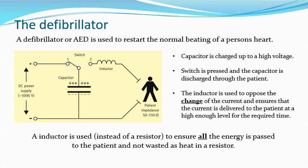Moving on to further examples: a defibrillator contains both a capacitor and an inductor. The capacitor is charged to a particular voltage, then discharged through the inductor. The inductor opposes the rate of change in current, ensuring the current delivered to the patient remains high enough for long enough. An inductor is used rather than a resistor so that all the energy is passed to the patient, as inductors generate far less heat than resistors.